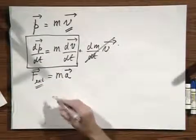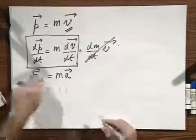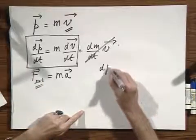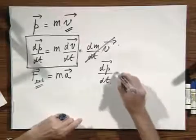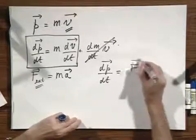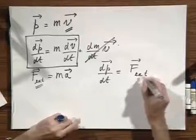You will see later why I want to make that distinction. And so this tells you then immediately that dp dt, the change in momentum per unit time equals the force, the external force on the object.